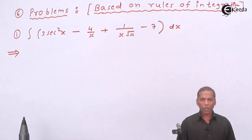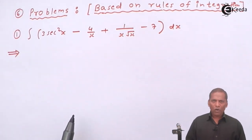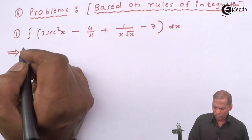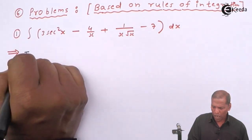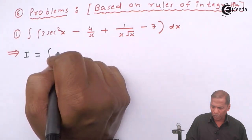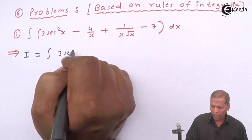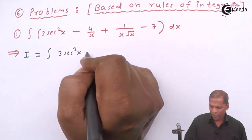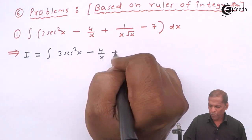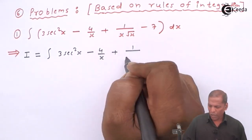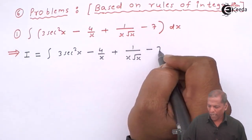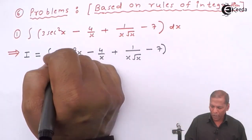Let's see the solution. First of all, we denote the given problem as I. So I is equal to integral 3 into sec square x minus 4 upon x plus 1 upon x into root x minus 7, bracket complete.